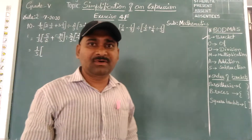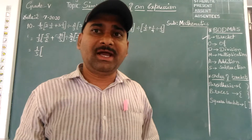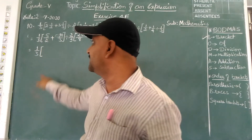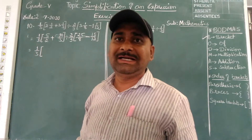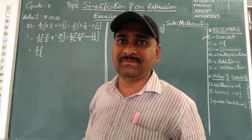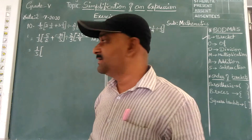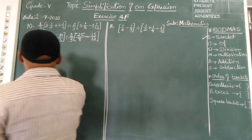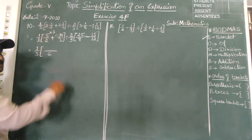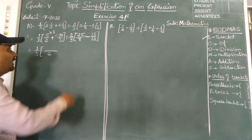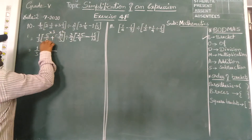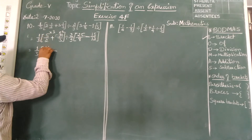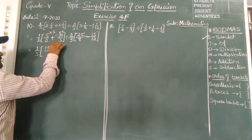Simplification of the first bracket involves the addition of two fractions with different denominators. Take the LCM of 2 and 3, which gives 6. So 2 threes are 6 and 3 twos are 6. Then 5 threes are 15 plus 10 twos are 20, giving 35/6.